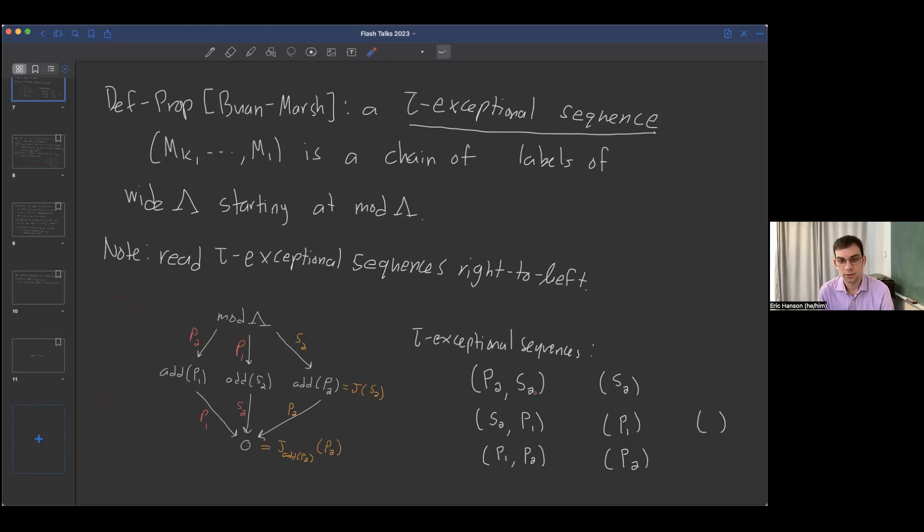Going back to our example, here we have the same picture as before, and there are seven tau exceptional sequences. S2, P2 comes from reading the labels down like this. P1, S2 from there, P2, P1 from here. We could also take just one label. We have to start at the top, so we get those three, and then you can take the empty tau exceptional sequence as well.